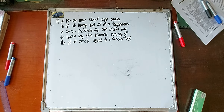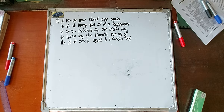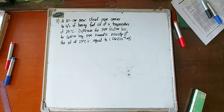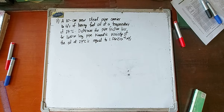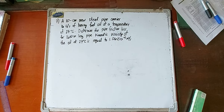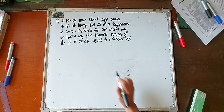Let's solve number seven. A 10 cm new steel pipe carries 16 liters per second of heavy fuel oil at a temperature of 27 degrees Celsius. Determine the pipe friction loss for a 1600-meter long pipe. The kinematic viscosity of oil at 27 degrees Celsius is equal to 1.06 times 10 raised to negative 4 square meters per second.